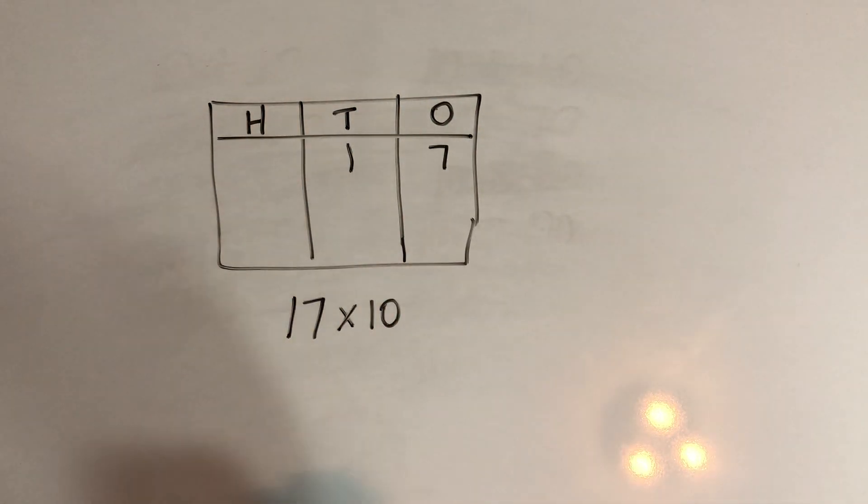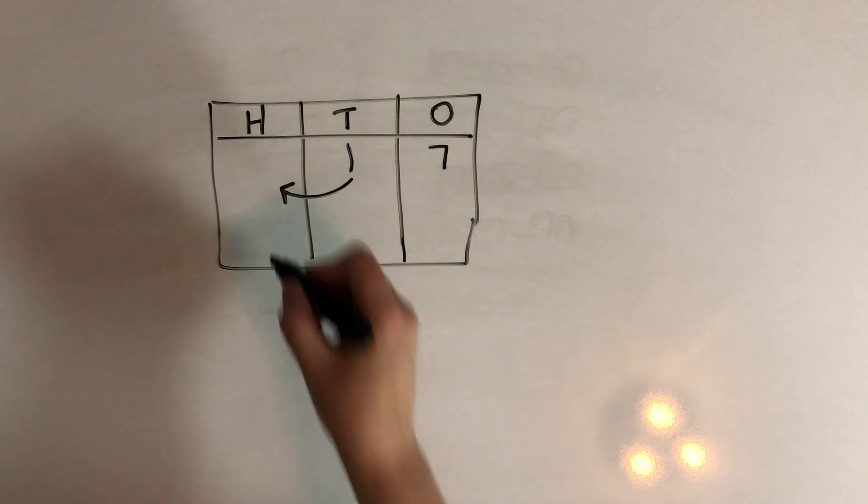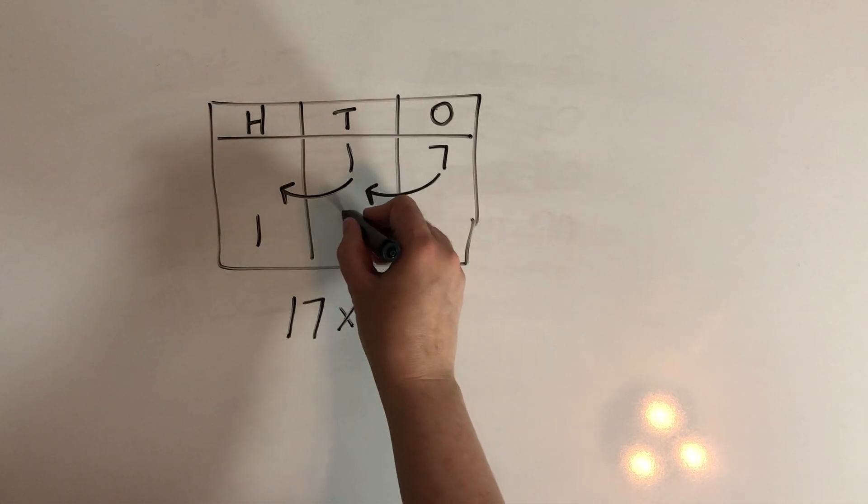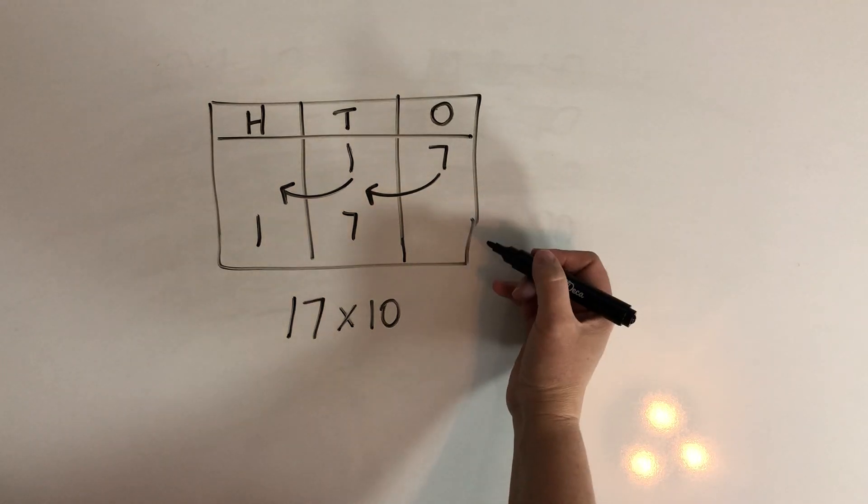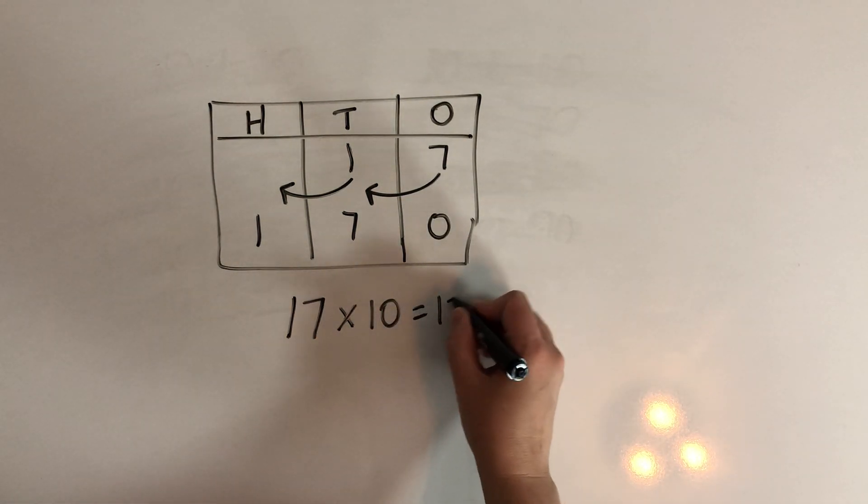When we multiply by 10, what happens? Well, this 1 is going to go to the 100s place, isn't it? The 7 is going to go into the 10s place. And then we have a blank space in the 1s, which we're going to fill with a 0. So we get 170.